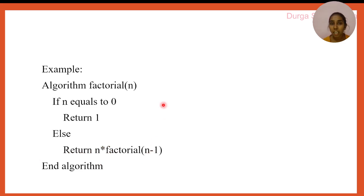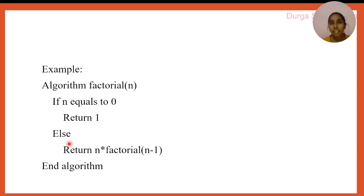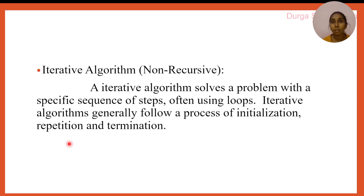Continuing the recursion: five into four into three into two into one. It returns the final output 120. So if the algorithm uses recursion, we call it a recursive algorithm; if it uses a for loop, while loop, or do-while loop, it is an iterative algorithm. I hope it is clear. If you have any doubts, please comment below. For more videos, please subscribe to my channel. Thank you.